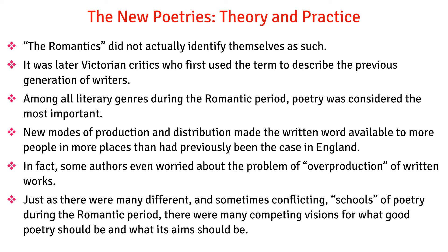The New Poetries — Theory and Practice: The Romantics did not actually identify themselves as such. It was later Victorian critics who first used the term to describe the previous generation of writers. Among all literary genres during the Romantic period, poetry was considered the most important. New modes of production and distribution made the written word available to more people in more places than had previously been the case in England. In fact, some authors even worried about the problem of overproduction of written works. Just as there were many different and sometimes conflicting schools of poetry during the Romantic period, there were many competing visions for what good poetry should be and what its aim should be.